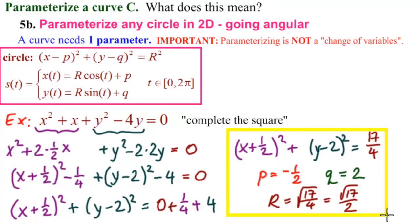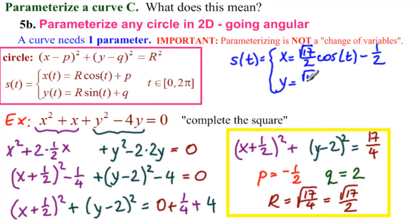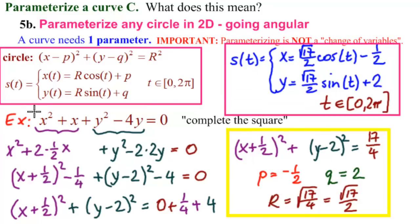So, what is our parameterization? s(t) equals: x = √17/2 cos(t) - 1/2, y = √17/2 sin(t) + 2. And because we were not given any interval, that means we have the whole circle. So, t is from 0 to 2π. And this is the parameterization of our example.